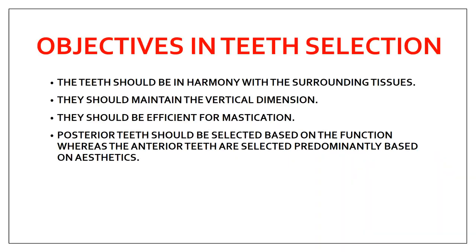Now what are the objectives in selecting the teeth? The first one is the teeth should be in harmony with the surrounding tissues. Whenever you are selecting the teeth for the denture, they should be in harmony with the surrounding tissue — that is, they should not create any problems to the surrounding tissue, which can be the gingiva or mucosa.